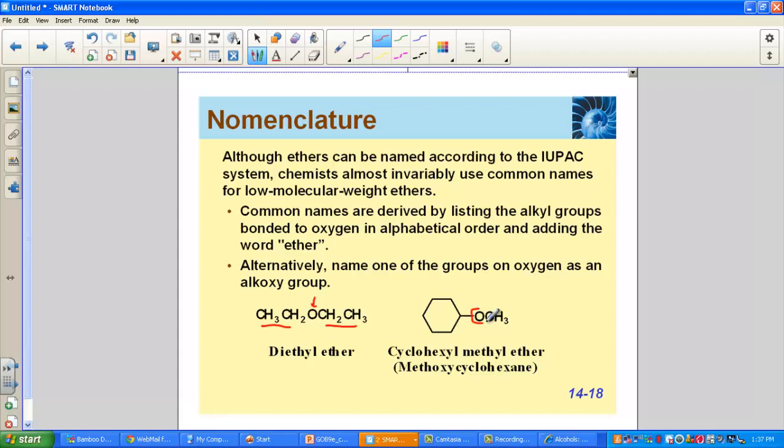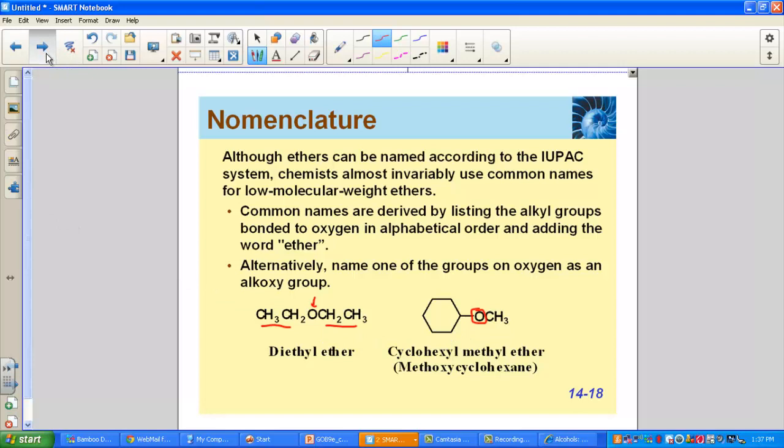Here's the oxygen giving us the ether functional group. On one side we have a six-carbon ring, which we're naming cyclohexyl, and on this side is a methyl group for the one-carbon chain. Simply in alphabetical order, we get cyclohexyl methyl ether. Something important to notice: there are no commas, no dashes between these words, they're simply separated with a space. This comes from an alphabetical listing of the hydrocarbon chains attached to the oxygen.